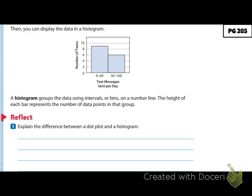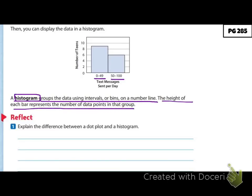We can then take that data and display it in what we call a histogram. It looks very similar to a bar diagram, only our bars are side by side, and instead of having specific numbers across the bottom, it's ranges — we have our 0 to 49 and our 50 to 100. A histogram groups the data using intervals or bins on a number line; the height of each bar represents the number of data points in that group. With a histogram, we can't see each individual point, but we can see ranges.